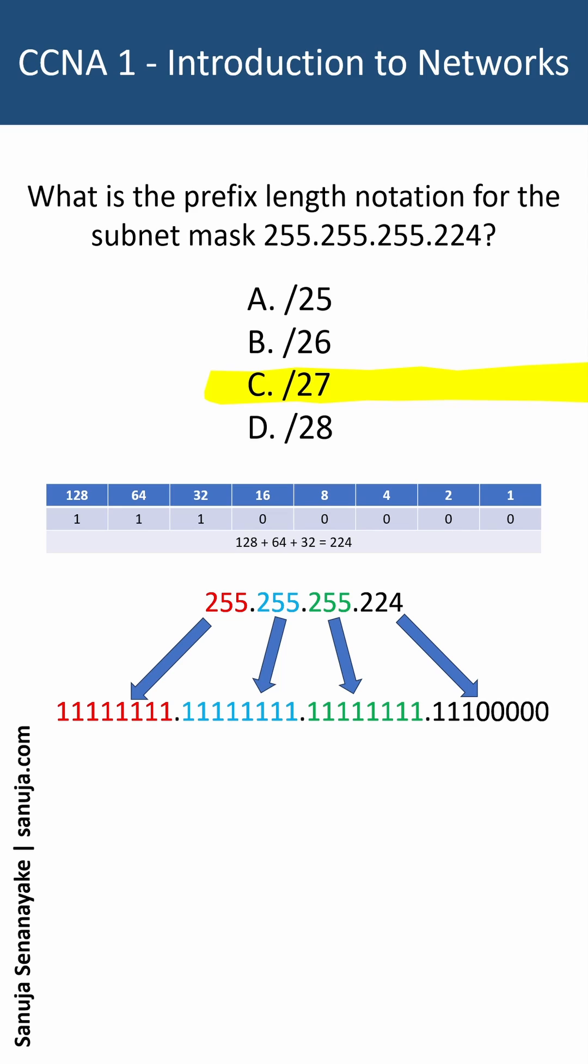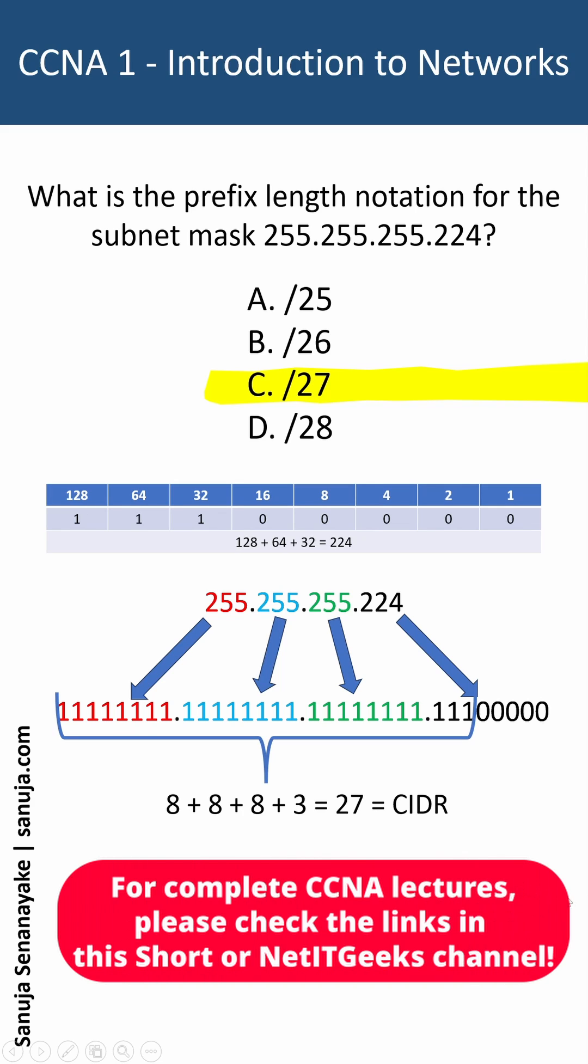The prefix length is the number of consecutive ones in the subnet mask. Therefore, in this situation, it's 27 because we have 8 plus 8 plus 8, and then we have three more here that equal to 27, and that will give you slash 27 as the prefix length notation.